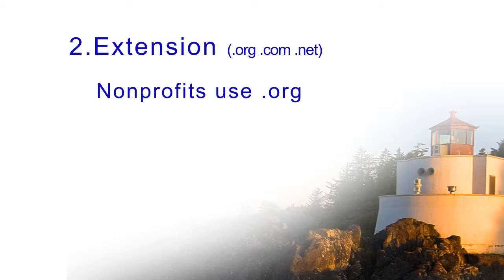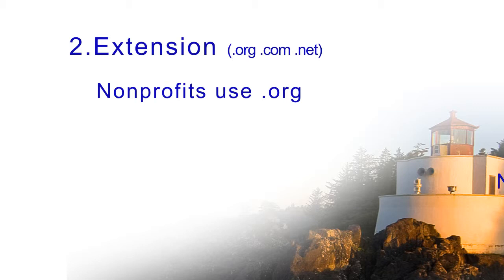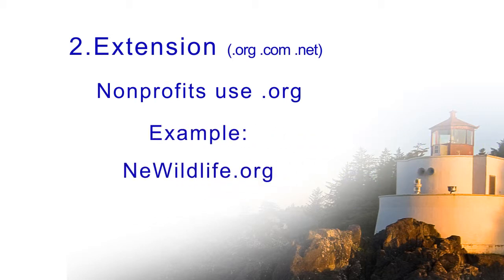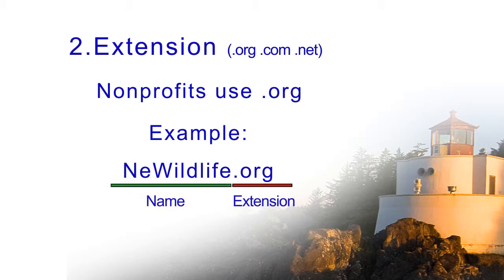If I remember right, ours is newildlife.org. Yes, and that's for nonprofits. What happens if you accidentally call it .com? It's not a problem. Oftentimes nonprofits will buy up the other extensions so people don't get confused. It's just more recognized that .org is a nonprofit, .com is a business, and .net is sort of all the leftovers.